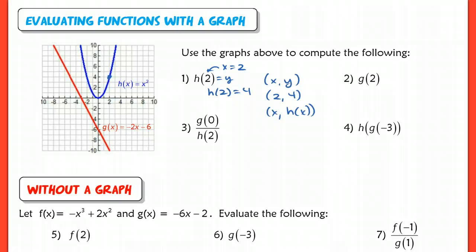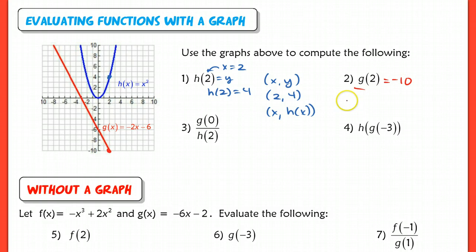Now g of 2 — this time I switch to the graph of g, so I look on the red line. If I go to 2 on the red line, I'm all the way down at negative 10. So g of 2 equals negative 10, which means that coordinate x, g of x is equal to (2, -10).